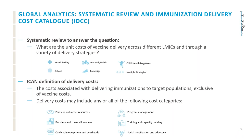The IDCC is a product of a systematic review where we sought to answer the question: what are the unit costs of vaccine delivery across different LMICs, or low and middle income countries, and through a variety of delivery strategies, including health facility delivery, school delivery, etc. The ICANN team defined delivery costs as the costs associated with delivering immunizations to target populations, exclusive of vaccine costs. Delivery costs may include cost categories such as paid and volunteer human resources, cold chain equipment and overheads, training and capacity building, etc.